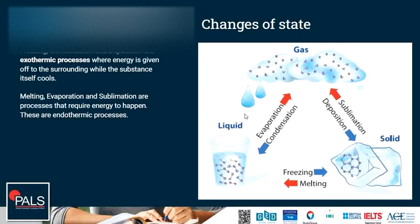Freezing, condensation, and deposition are exothermic processes, which means energy is given off to the surroundings when this happens. Melting, evaporation, and sublimation are endothermic processes that require energy to happen. You probably know that from holding an ice cube in your hand — your hand will cool down in the process while the ice cube melts, because the melting of the ice takes heat energy from your hand.